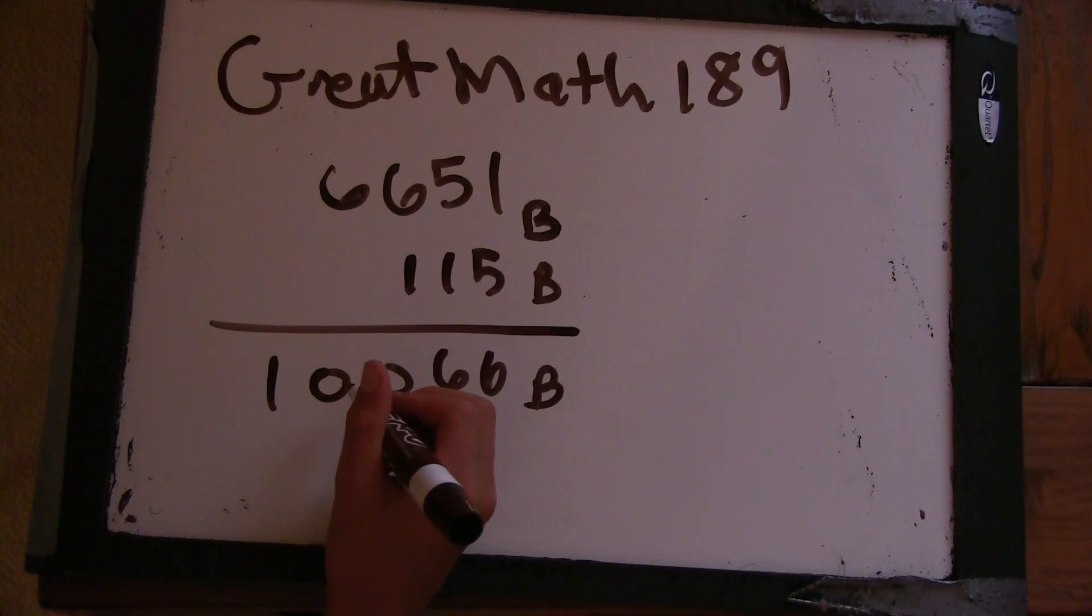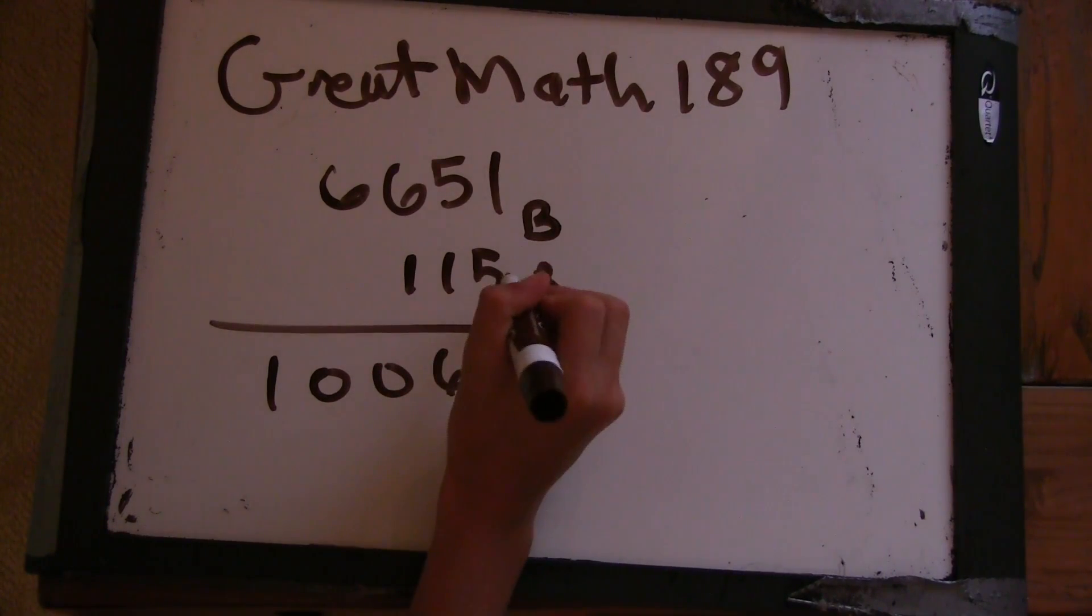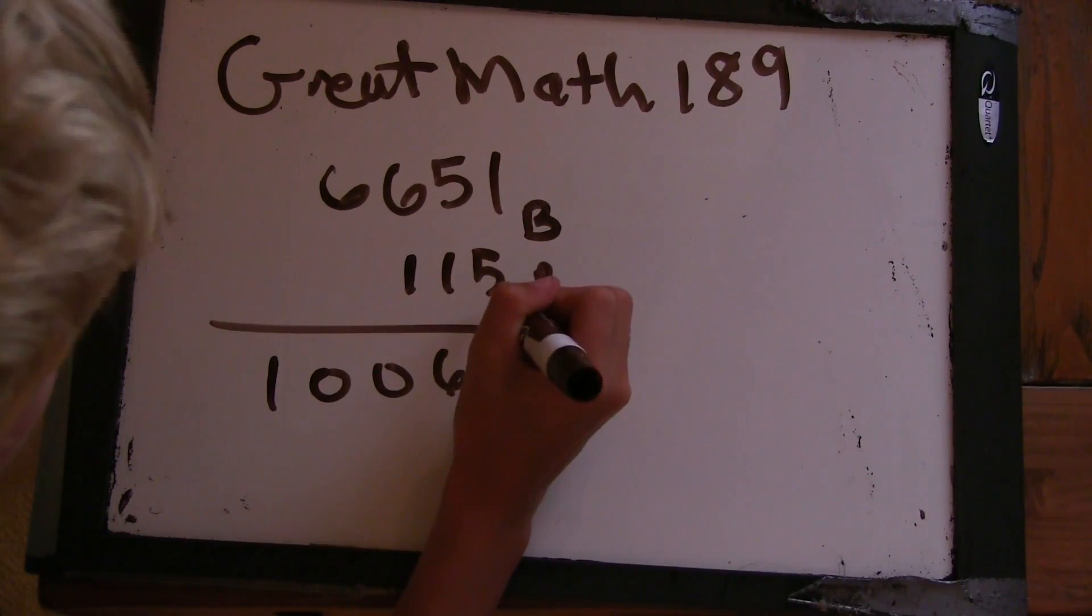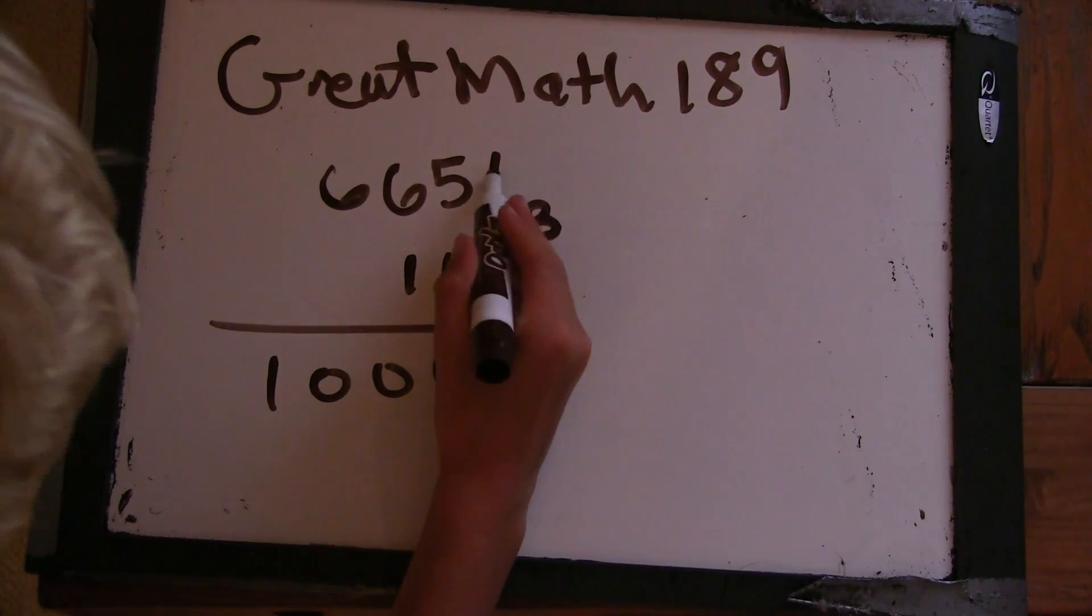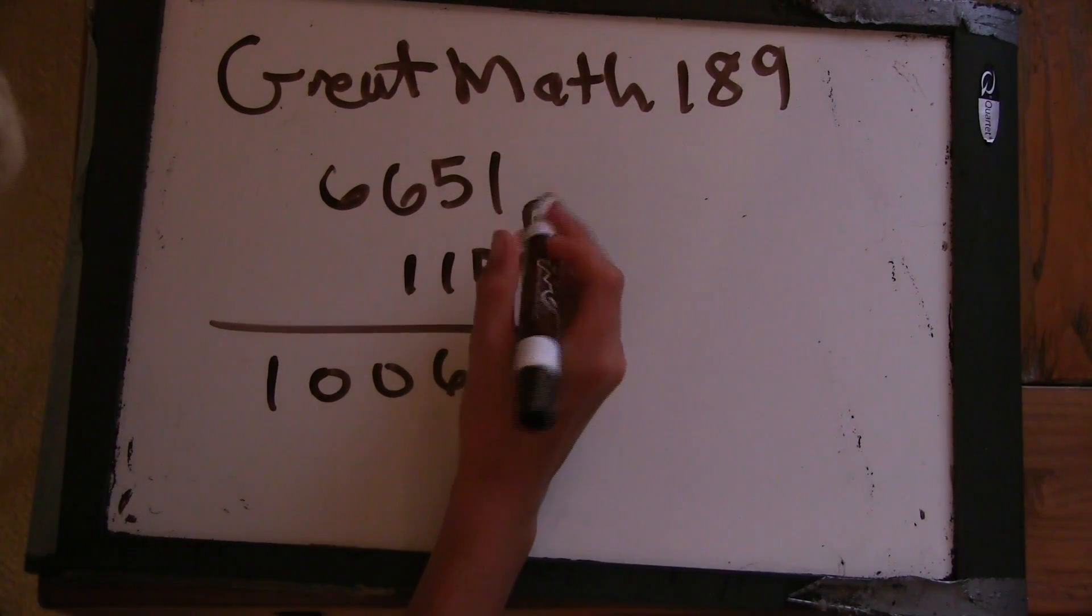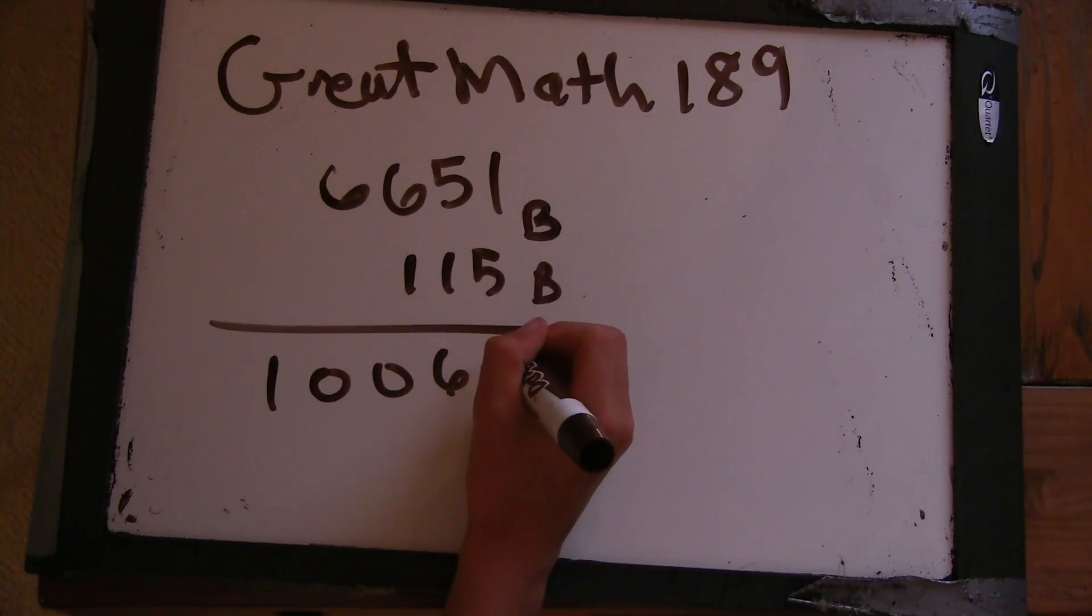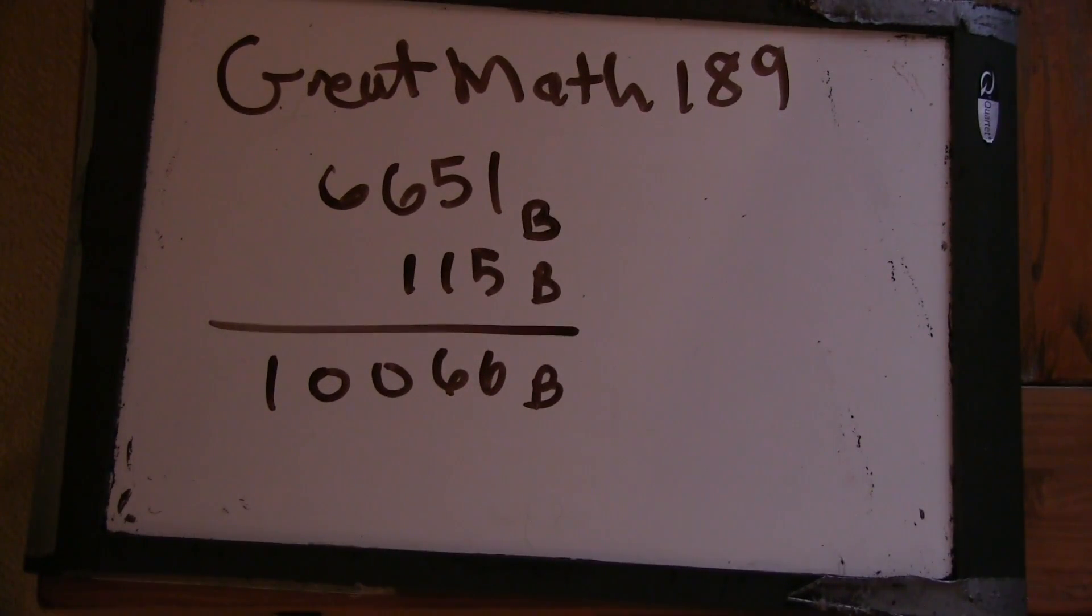So the first digit base, the B to the 0 digit, the 1's digit here, 1 plus 5 goes to 6. So that doesn't really give us any help except that base B must be more than 6. Okay.